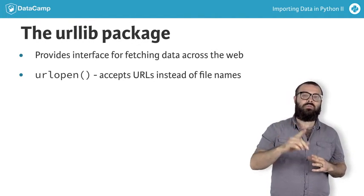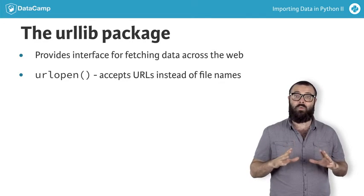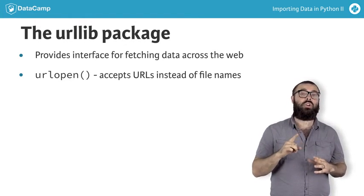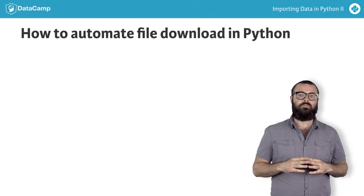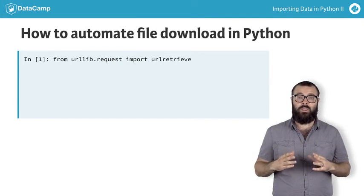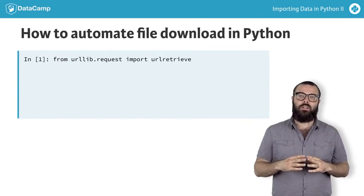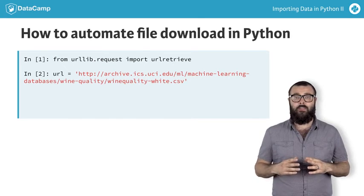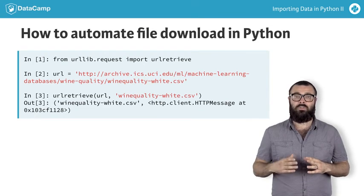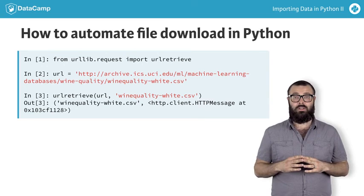Let's now dive directly into importing data from the web with an example: importing the wine quality dataset for white wine. Don't get jealous — in the first interactive exercise, it will be your job to import the red wine dataset. All we have done here is imported a function called urlretrieve from the request sub-package of the urllib package. We assigned the relevant URL as a string to the variable url. We then used the urlretrieve function to write the contents of the URL to a file, winequality-white.csv. That's it.